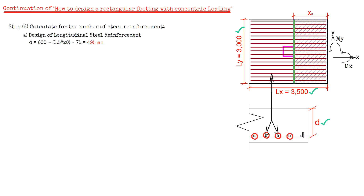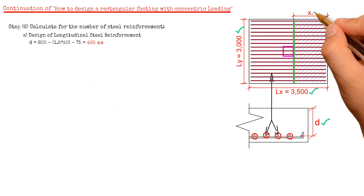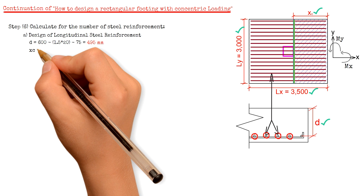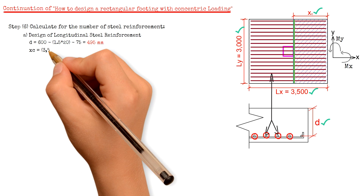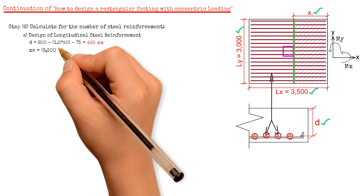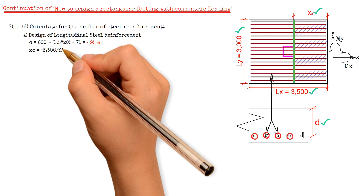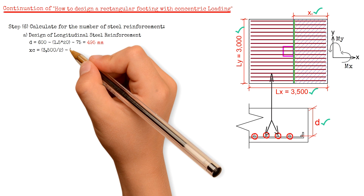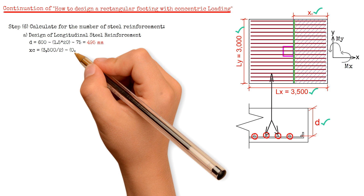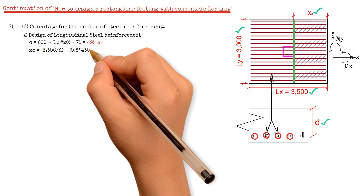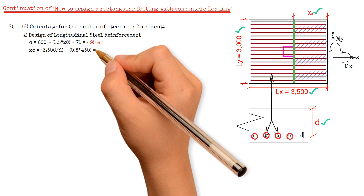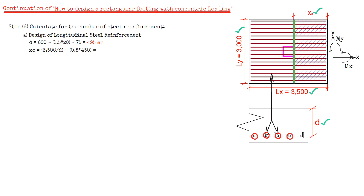Then we will calculate for X sub C, which equals length LX 3500 mm divided by 2, minus 0.5 times CX 450 mm, and that gives us 1525 mm.